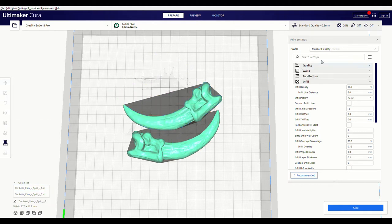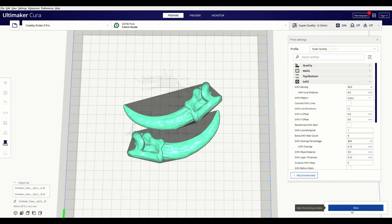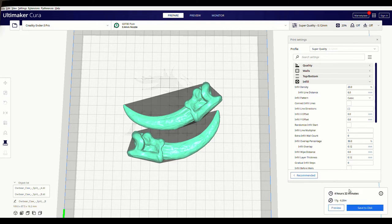Let's set the quality to 0.12mm. This setting results in some finer details. Slice and dice. And what do we got here? Four and a half hours, not bad.